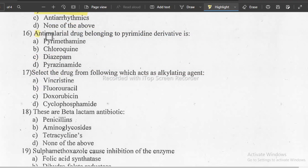Question number 16: anti-malarial drug belonging to pyrimidine derivative. You will get the answer in the classification of anti-malarial drugs. The correct answer is A, that is pyrimidine. Next, question 17: select the drug from the following which acts as an alkylating agent. You will be getting the answer from anti-cancer drugs. The correct answer is cyclophosphamide.